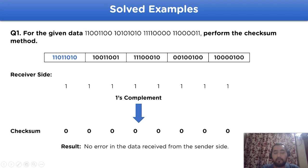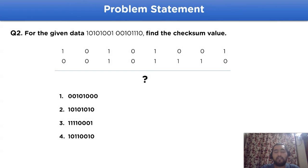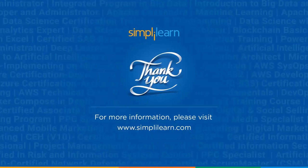With this, we have completed all the points regarding the working of the checksum method. Now, to better understand all the steps, let's take up a quiz: for the given data, find the checksum value. The given options are listed — you can give your answers in the comment section. If you have any questions regarding the topic, you can ask them in the comment section. Thank you for watching.